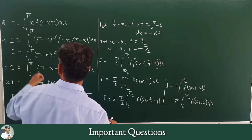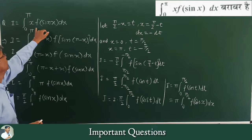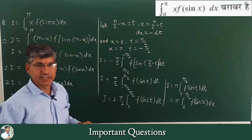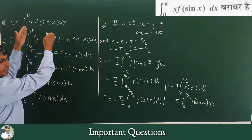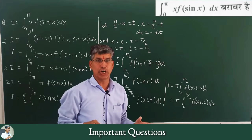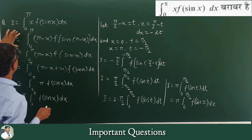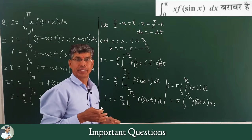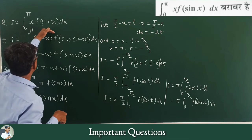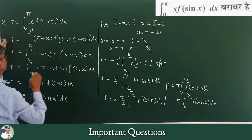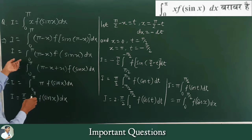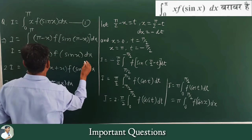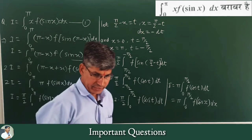The next question: I = integral from 0 to π of x·f(sin x)dx. We need to find its solution. Since these are objective questions with four options, we solve using properties. First, applying the P4 property: replace x with (π - x), using the fact that sin(π - x) = sin x. This gives I = integral from 0 to π of (π - x)·f(sin x)dx — equation 2.